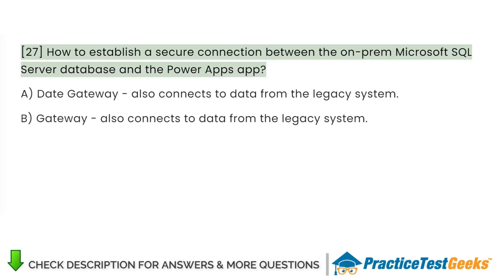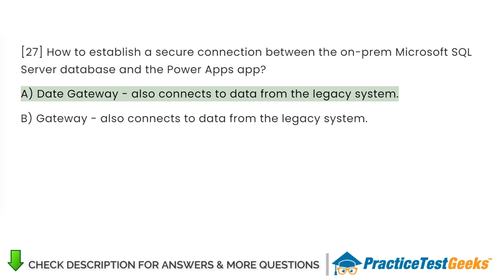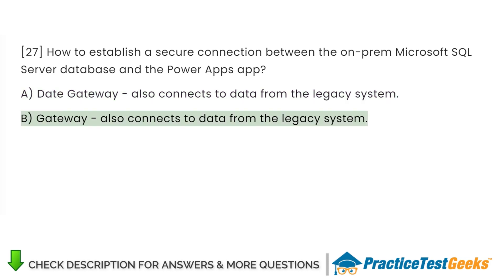How do you establish a secure connection between the on-premises Microsoft SQL Server database and the Power Apps app? A. Data Gateway — also connects to data from the legacy system. B. Gateway — also connects to data from the legacy system.